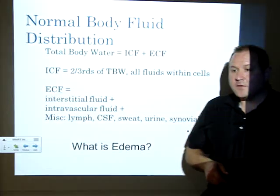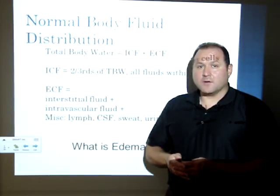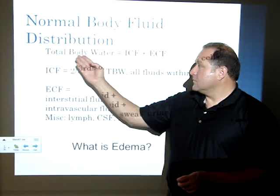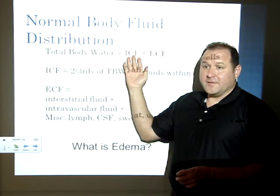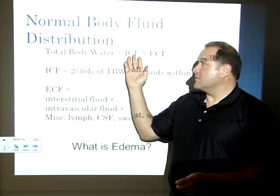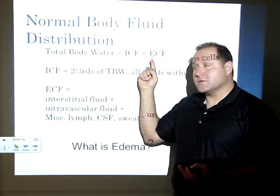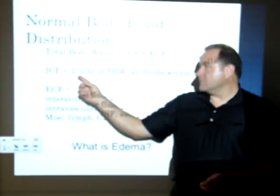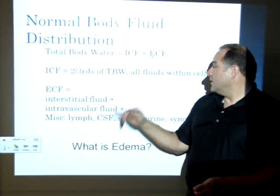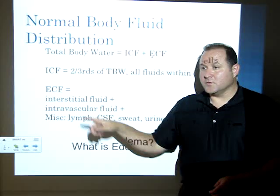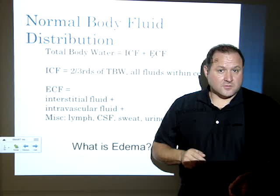Let's talk about the normal body fluid distribution — where does your water go? Total body water, all the water in your body, consists of everything intracellular, meaning inside your cells, and extracellular fluid, everything outside your cells. Intracellular fluid is two-thirds of all your total body water — that's where most of your water is.